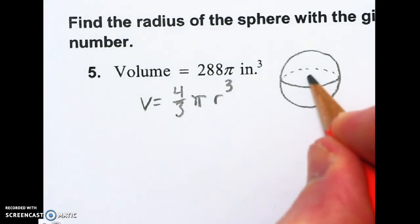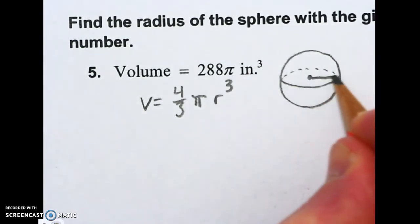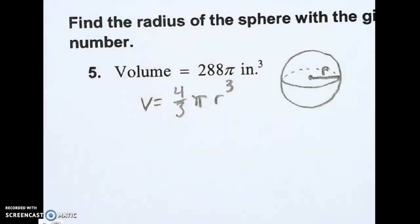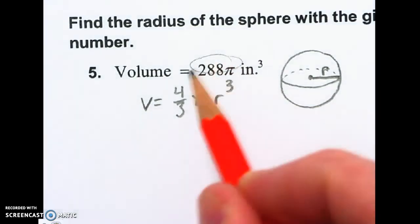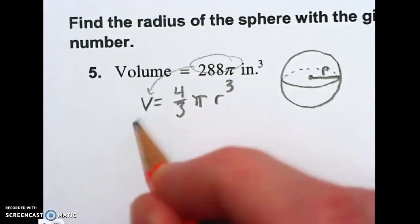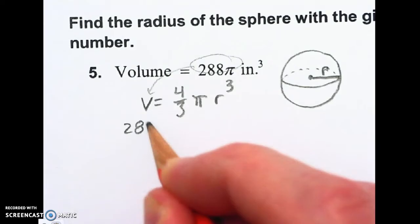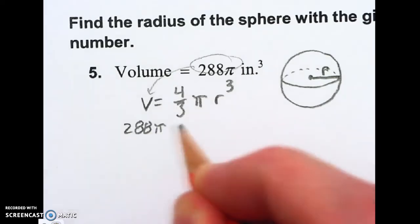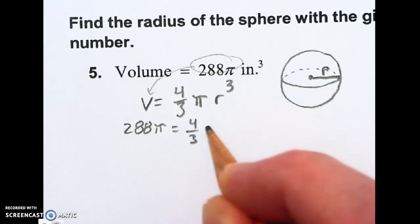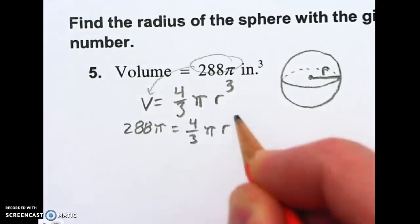So now I'm going to draw my middle center point and an arrow aligned over to the side. That is R, and that is what we're solving for. So I'm going to put this volume in the volume spot. So I'll have 288π equals 4 over 3 π R cubed.